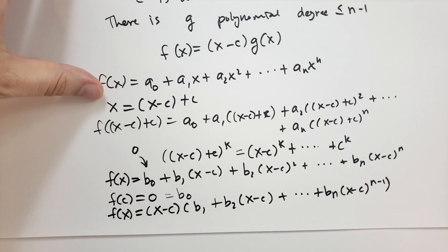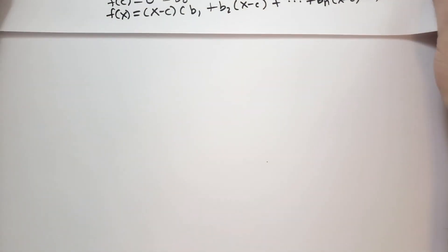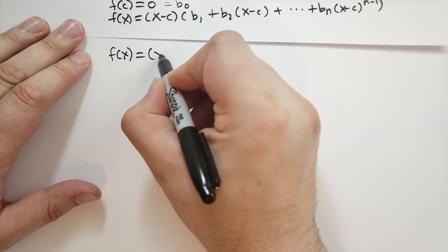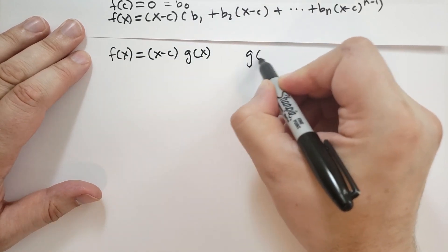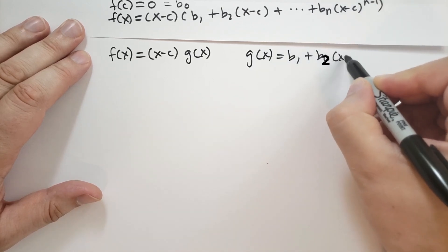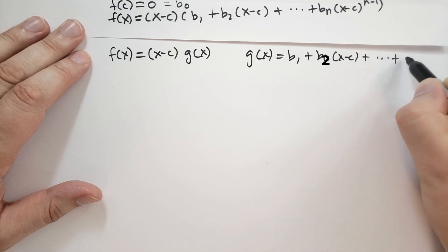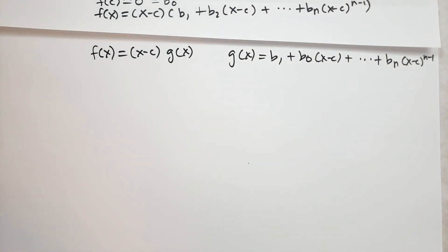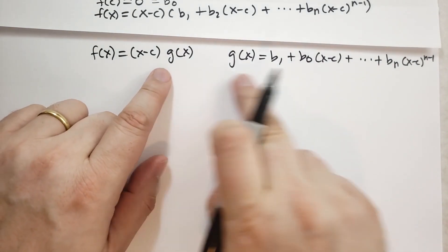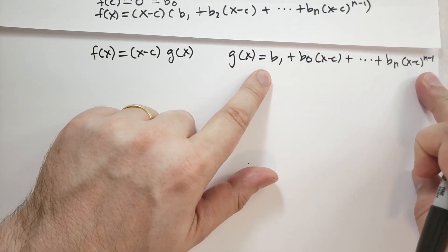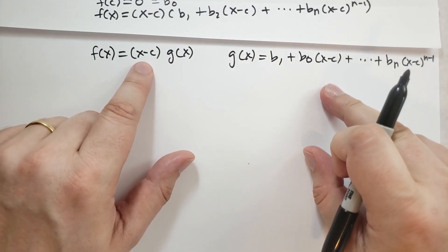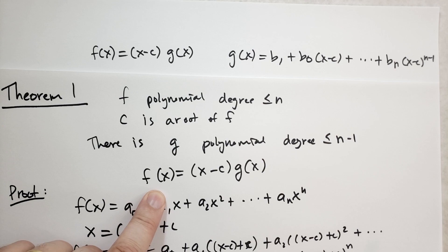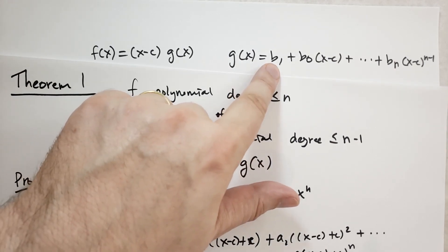So we've factored out (x−c) and we can write f(x) = (x−c) · g(x), where g(x) = b₁ + b₂(x−c) + ··· + bₙ(x−c)ⁿ⁻¹. We've proven all the conditions of the theorem: g(x) is a polynomial of degree at most n−1, and multiplying g(x) by (x−c) gives back f(x).